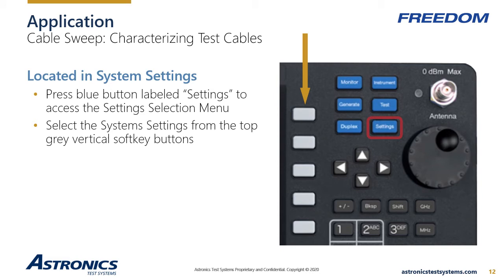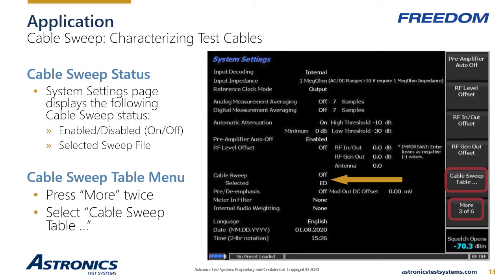If you are not familiar with the user interface of these instruments, follow along with these instructions. You may also want to watch one of our introductory videos on the basics of this technician-friendly user interface. The cable sweep is a system setting and is accessed by pressing the blue settings button and selecting system settings from the vertical soft key buttons. The status of the cable sweep settings is visible in the list of settings — the enabled or disabled state is shown as well as the selected cable sweep file. To access the cable sweep menu, navigate the vertical soft key menu by pressing the more key twice and select the soft key labeled cable sweep table.